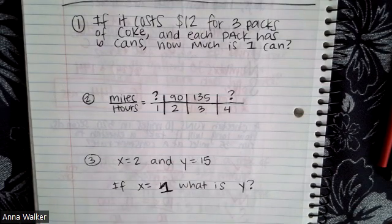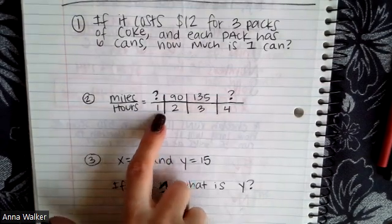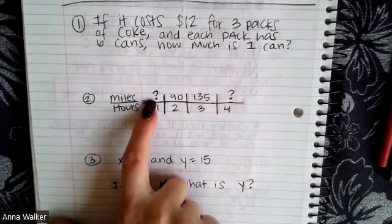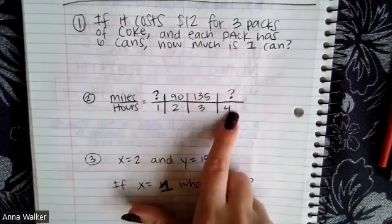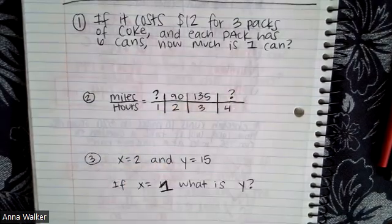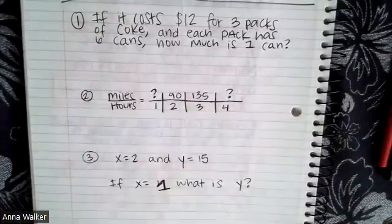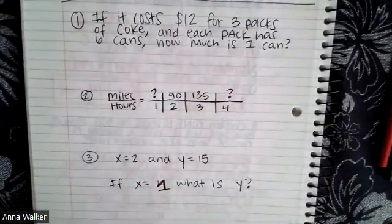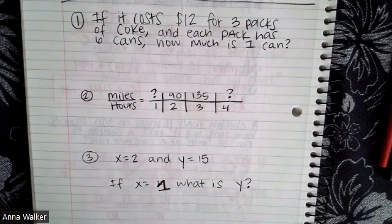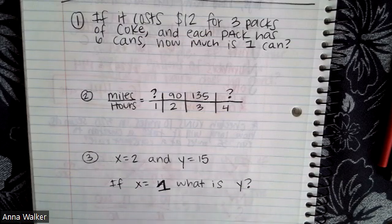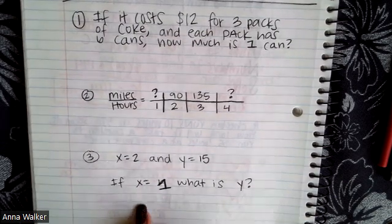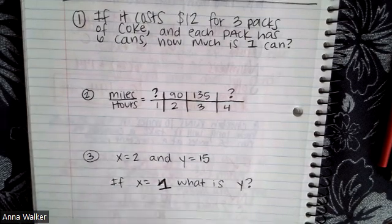The second question gives you miles and hours. So how many miles are in one hour if two hours there's 90 miles, if three hours is 135, and then how much is it in four hours? The next question is if x equals 2 and y equals 15, like that is the ratio they give you, if x is equal to 1 what is y? So kind of set up a proportion and solve. This is the unit rate right? If x equals 1, for one unit, what is y?